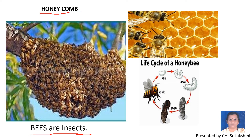The honeycomb is made by bees and it is made of hexagonal cells. If you can see, how many sides do they have? One, two, three, four, five, six — hexa. So six sides means hexa. The honeycomb is a mass of hexagonal cells, and these are built by honeybees in their nest.